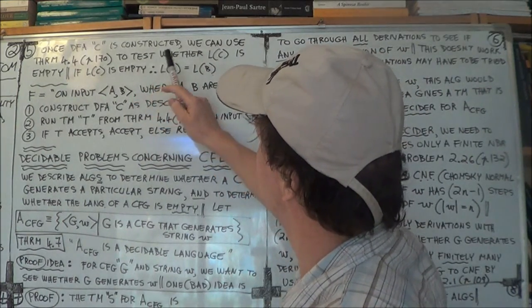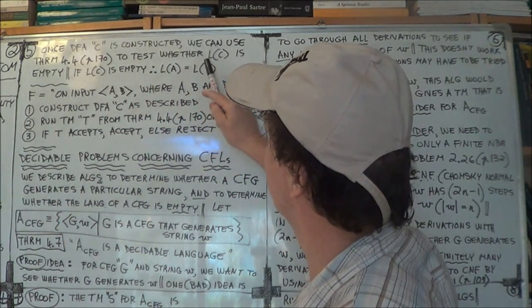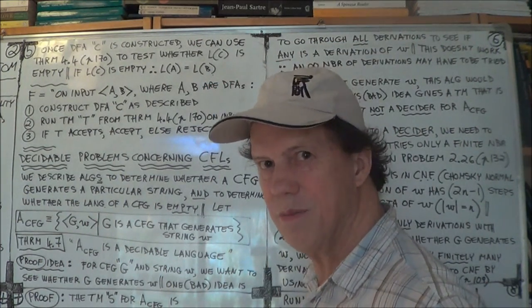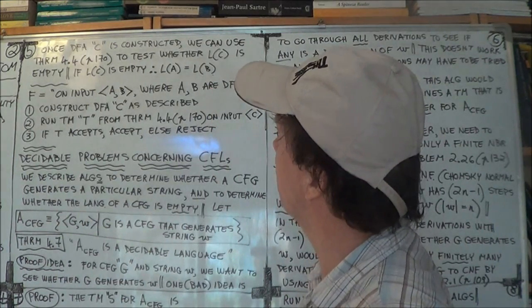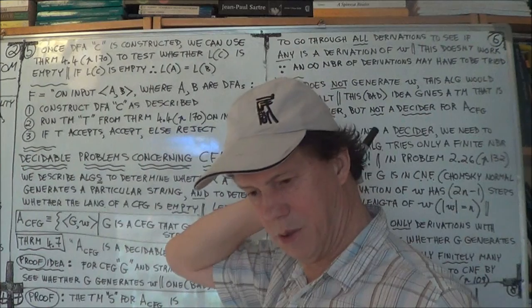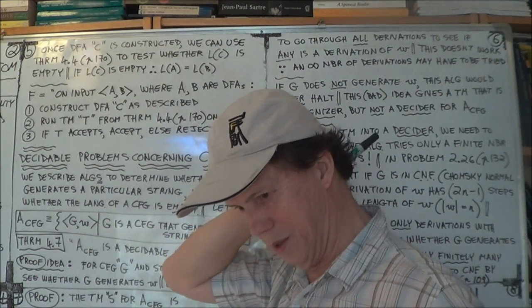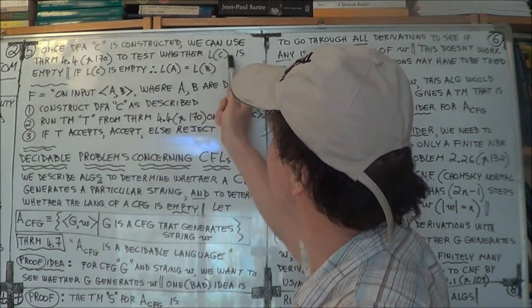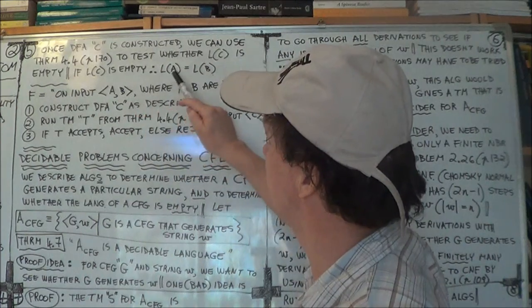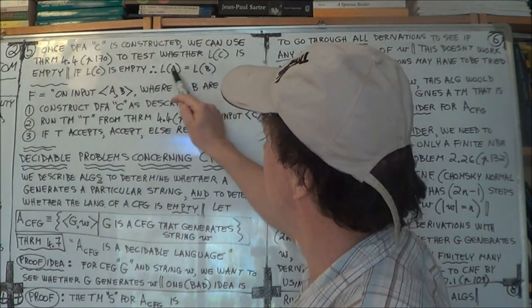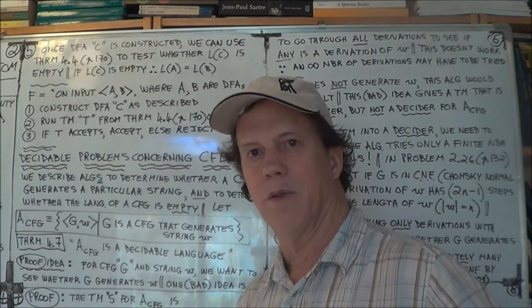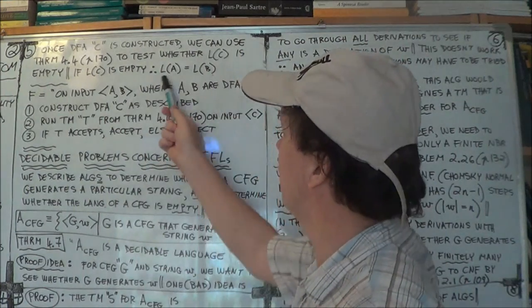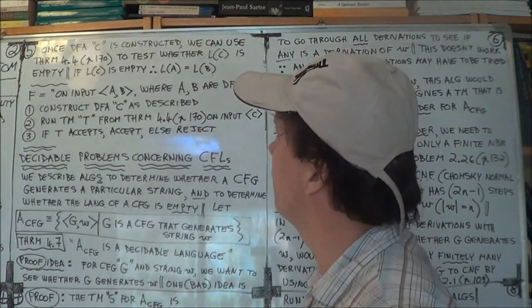And to test whether the language recognized by this DFA C, L of C, is it empty? That's what this theorem was about. It's showing that that empty language is decidable. So you can use that theorem to see whether L of C is empty. Now, if it is empty, well, therefore you know that these two DFAs are equivalent, because they do the same job. They recognize the same language. L-A equals L-B. Two languages are the same.